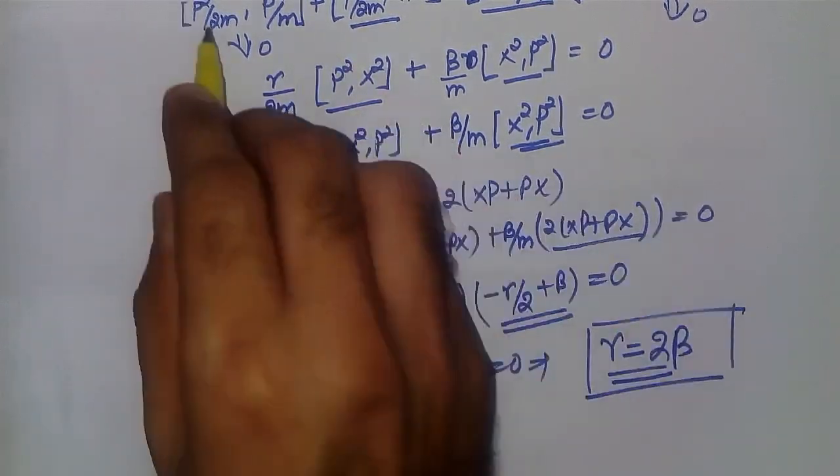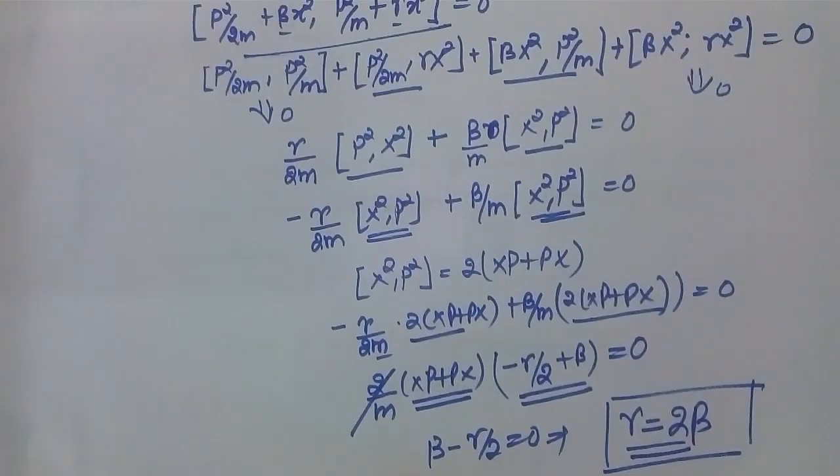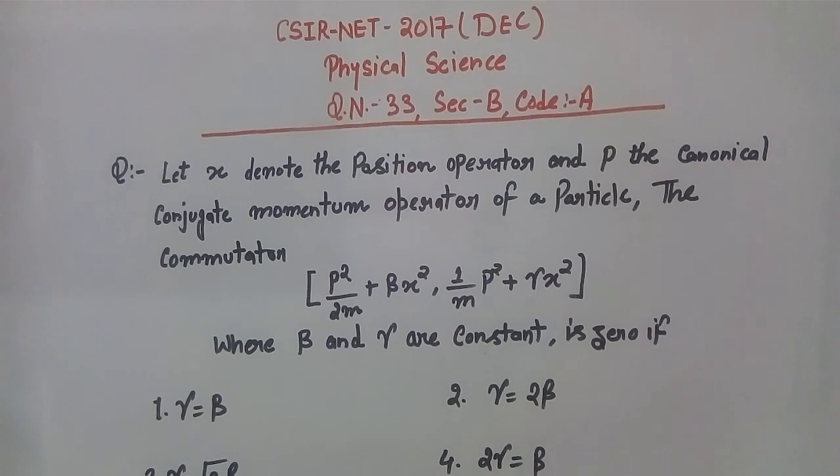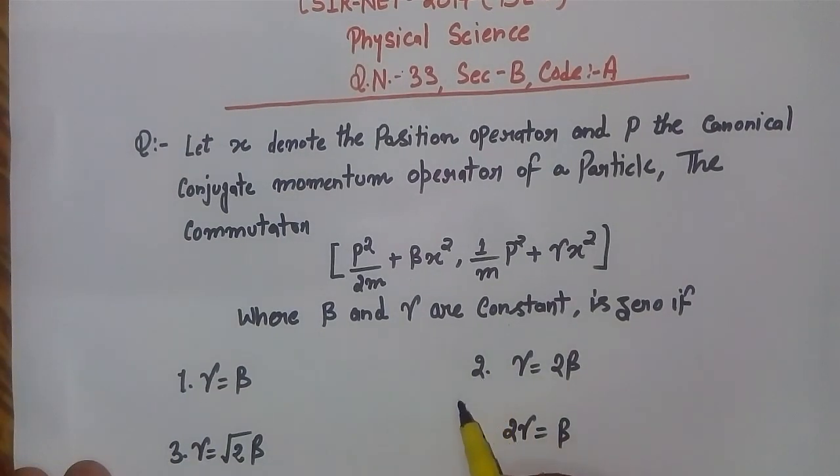For this value of γ, this relation will commute. Let's see if this value of γ matches any of our options. We have four options, and this matches the second option. So this is the answer.